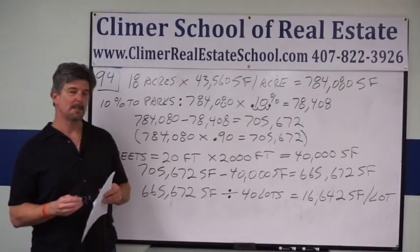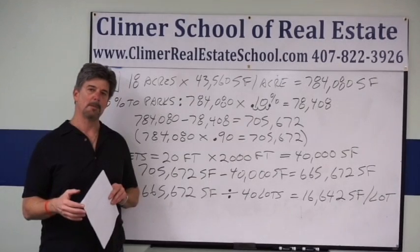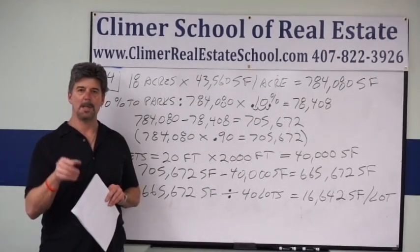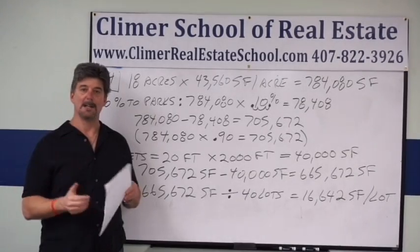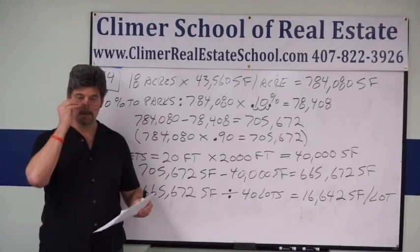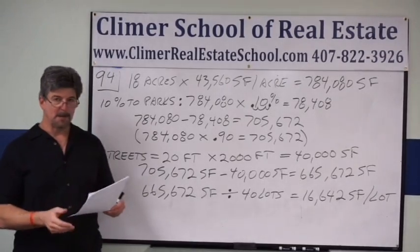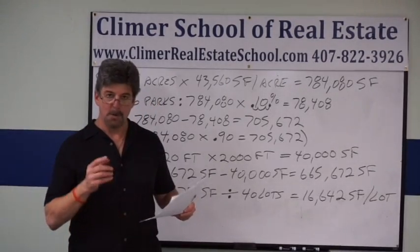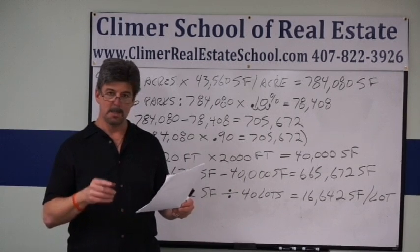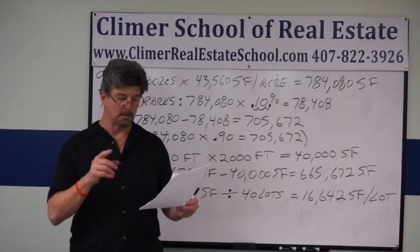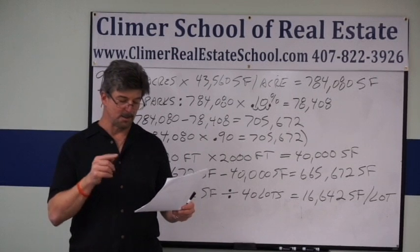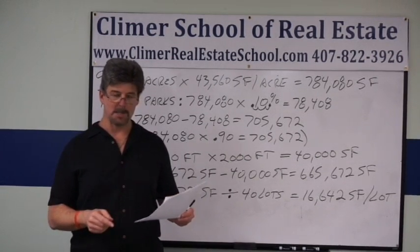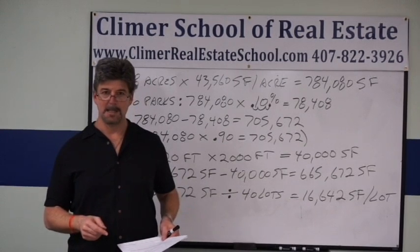This one is kind of like a developer subdividing problem and helps you get used to using your lots with the number of square feet in an acre. So let's read the problem. 94. The developer bought 18 acres of land. He intends to create a 40 lot subdivision. He knows 10% of the land will be used for parks and common areas. The streets require 20 feet by 2,000 feet. If the lots are all equal size, how big will each lot be?